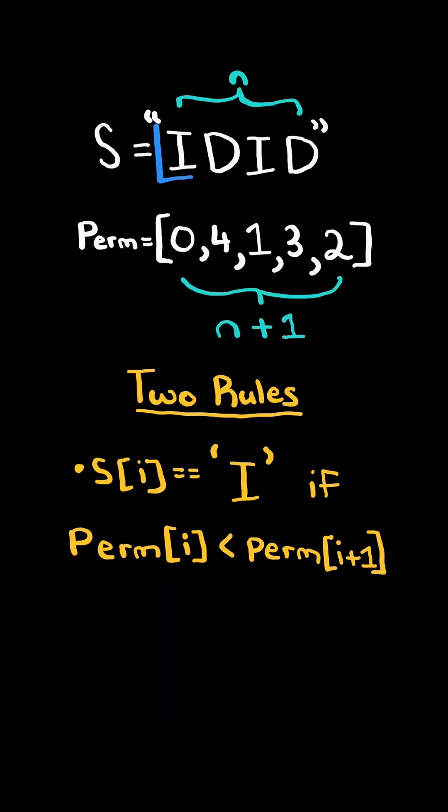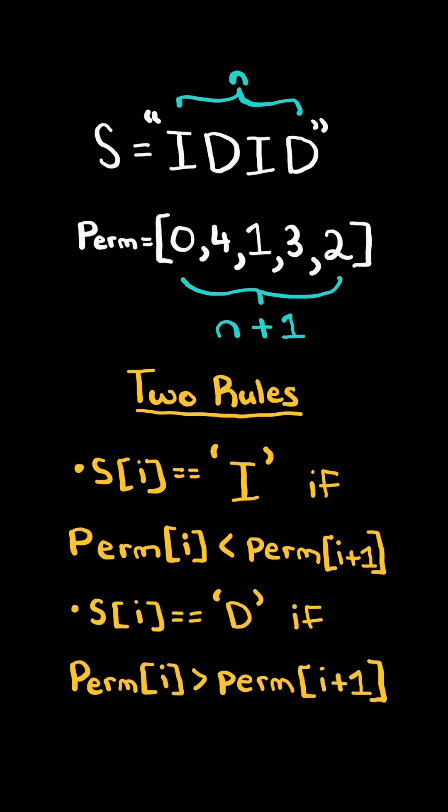The first rule is that if the character in the string is an I, then the corresponding index in the permutation must be less than the next index. The second rule is that if the character in the string is a D, then the same index in the permutation must be greater than its next index.